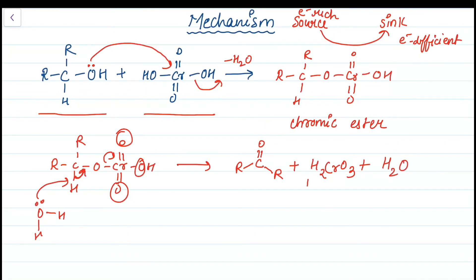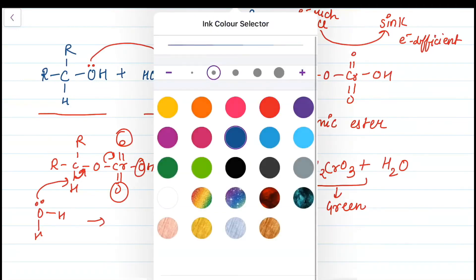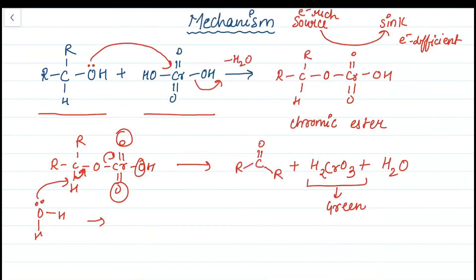H2CrO3 is green in color. So if we are doing this reaction and we observe a color change to green, it tells us that the alcohol has been oxidized and the chromium has been reduced — a useful visual indicator that the reaction is complete.